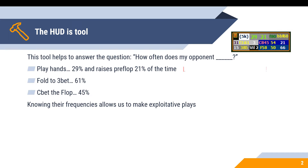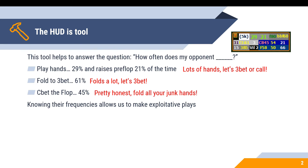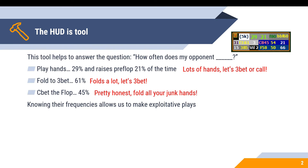For example, this person plays a lot of hands so let's 3-bet or call pretty frequently. They fold to a 3-bet a lot, so let's 3-bet bluff them. And they're pretty honest when it comes to making that flop c-bet, so we probably want to fold all of our junk hands against their c-bet.